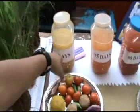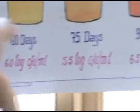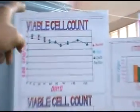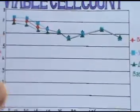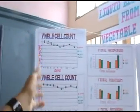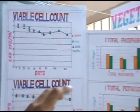At 60 days, its color is like this and its count is 6.0 log CFU per ml. At 75 days, it is 5.5 log CFU per ml. There is a difference because the microorganisms decrease from 60 to 75 days — specifically, the bad bacteria present in the rotten vegetables decrease. From 75 days onward, the good bacteria and molds increase, which help crop productivity.